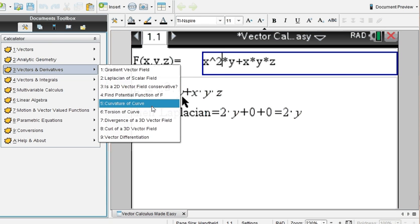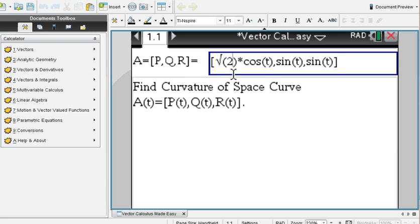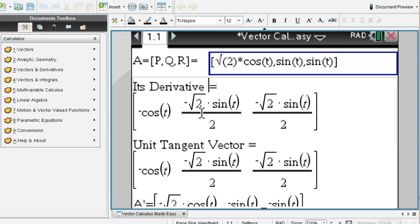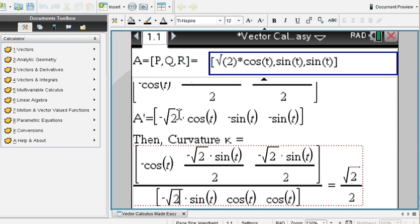Curvature of a curve. You enter your curve in terms of t. This is here with the three dimensional curve. PQR we named it. You see the steps. The derivative. Each component. The tangent vector. And then the curvature is computed using this fraction. We end up with root 2 over 2.